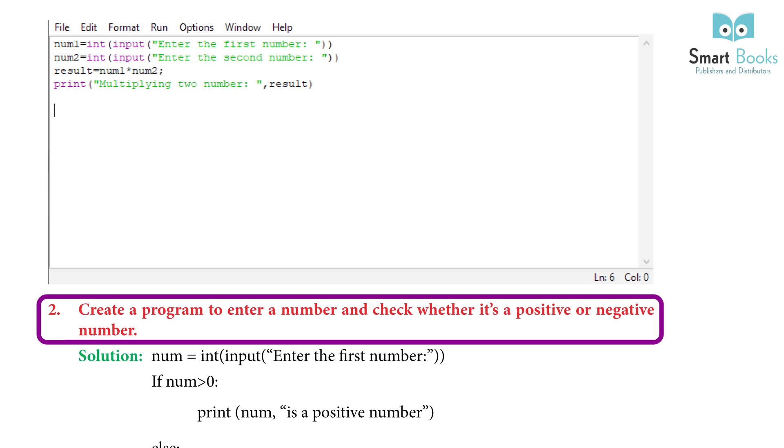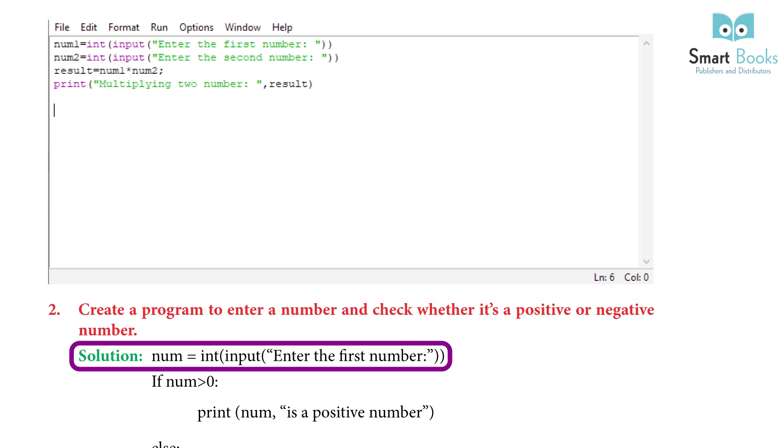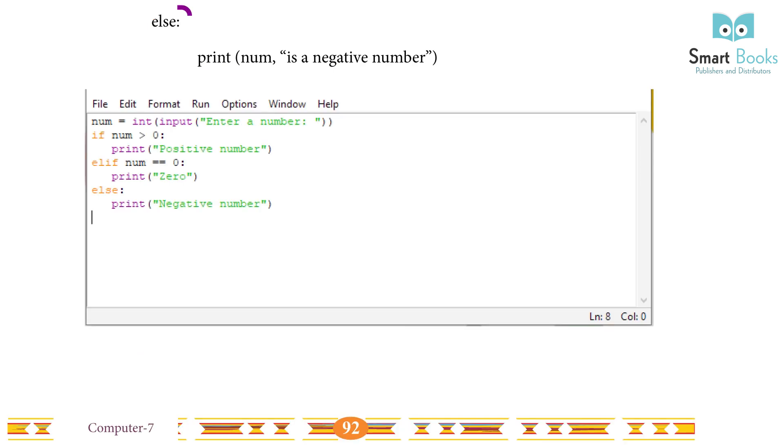Do: Create a program to enter a number and check whether it's a positive or negative number. Solution: number = int(input('Enter the first number')). If number < 0: print 'number is a positive number'. Else: print 'number is a negative number'.